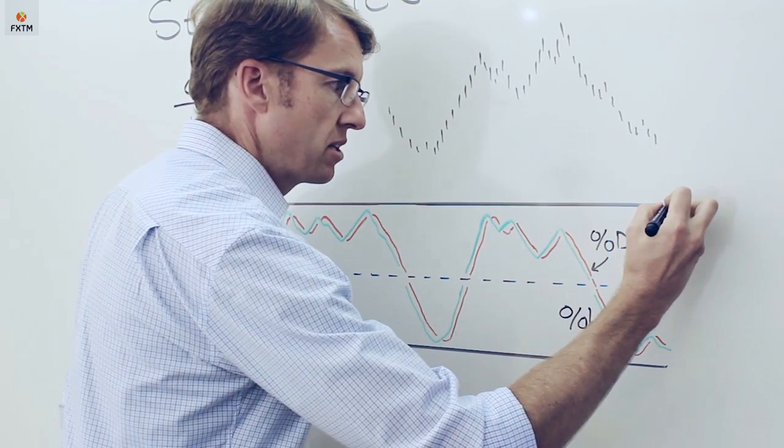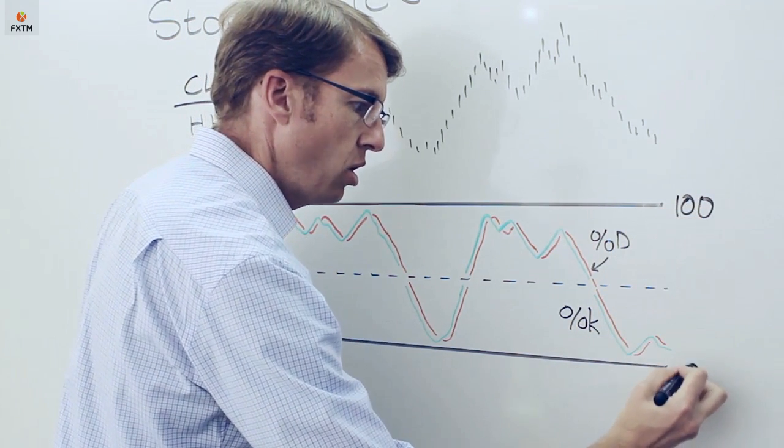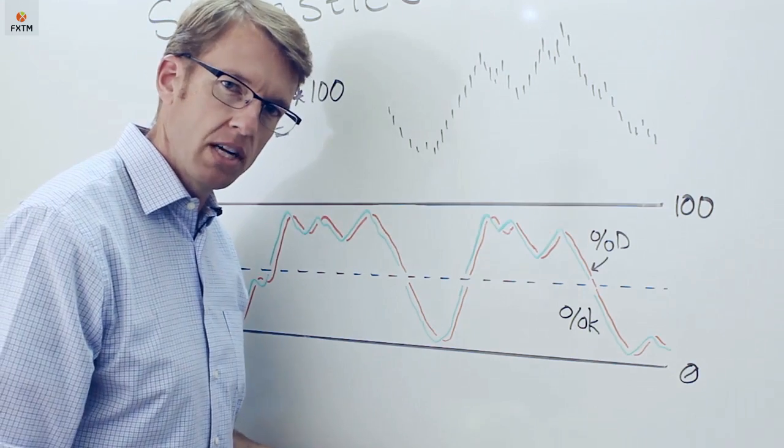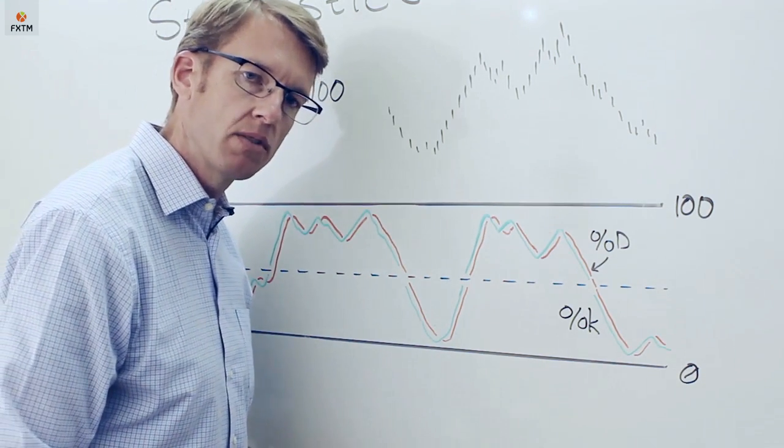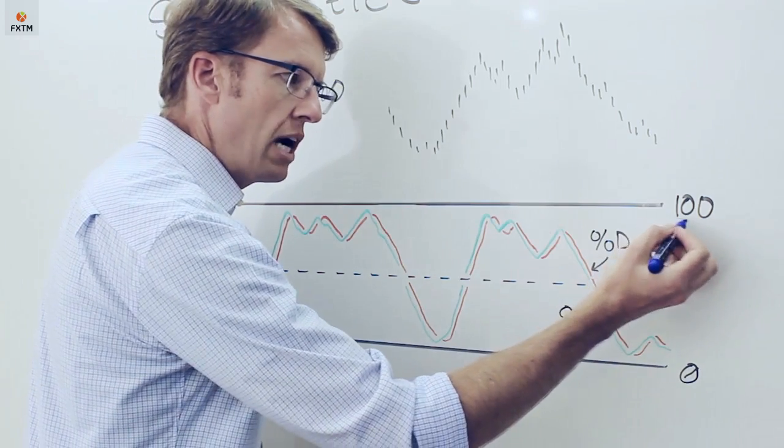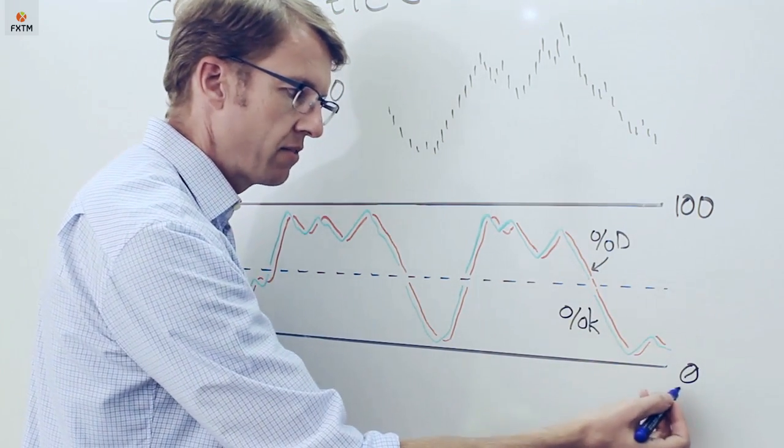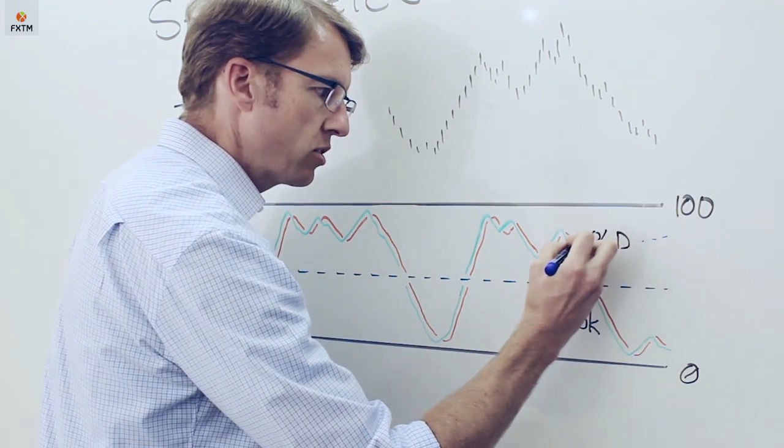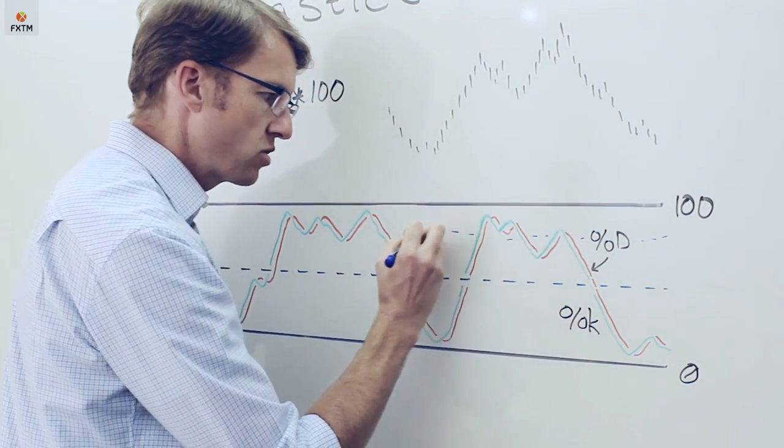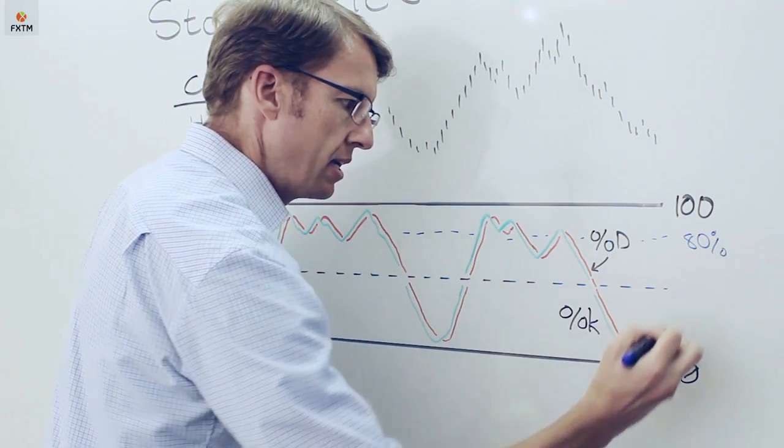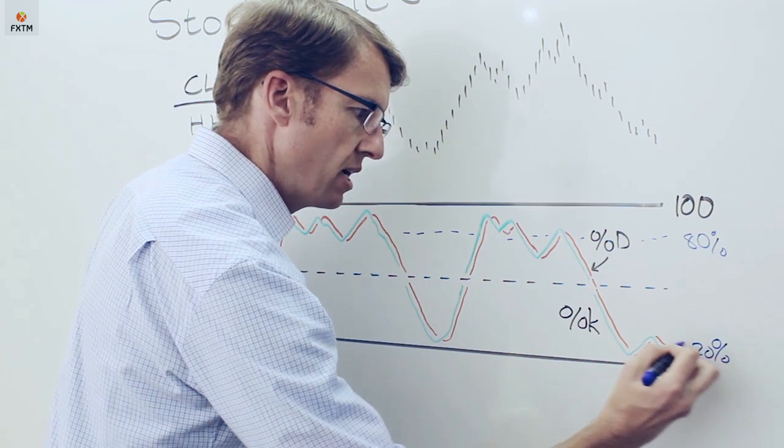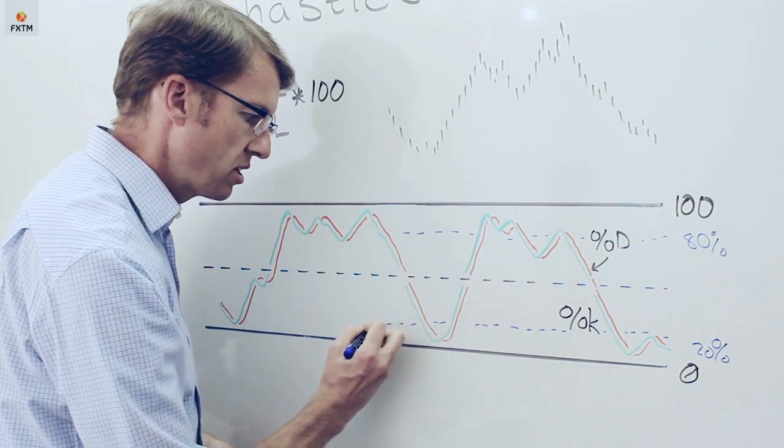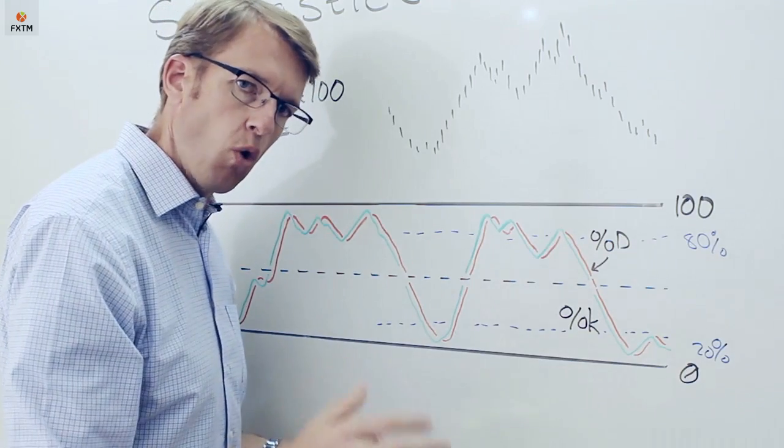Now, the oscillator is range-bound, which means that it cannot go beyond 100 and it can't go below zero. Further, investors will also apply an overbought and oversold territory here on the oscillator. It will very rarely equal 100 and almost never actually equal zero, but it'll get really close. What we look at is if it gets within about 20 percent of either of these extreme ranges, so here that would be about 80 percent and down here that would be 20 percent. In fact, below 20 percent is considered oversold and above 80 percent is overbought.